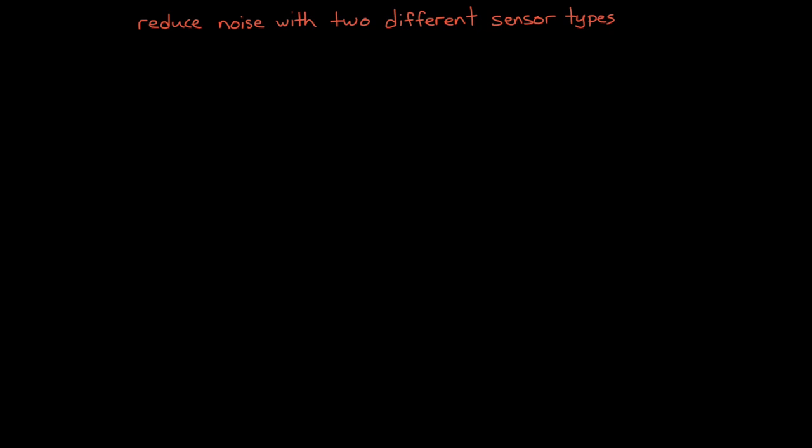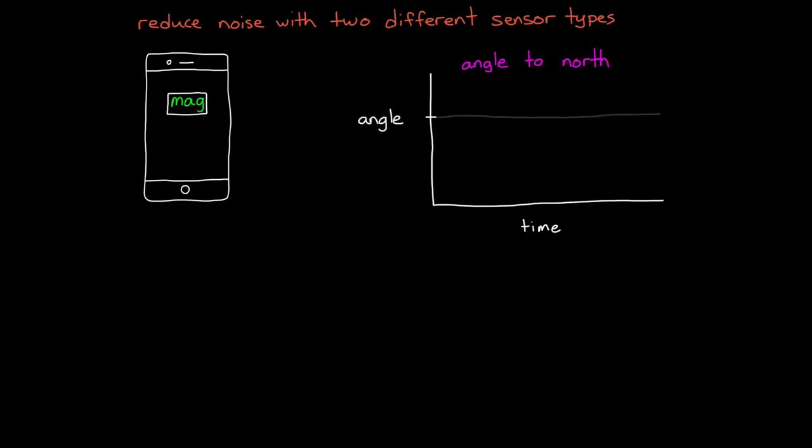Now we can also reduce noise by combining measurements from two or more different types of sensors, and this can help if we have to deal with correlated noise sources. For example, let's say we're trying to measure the direction your phone is facing relative to north.